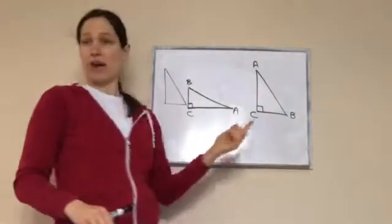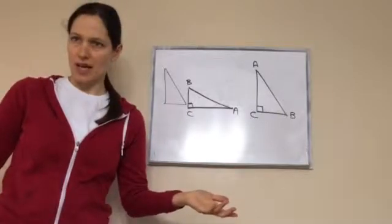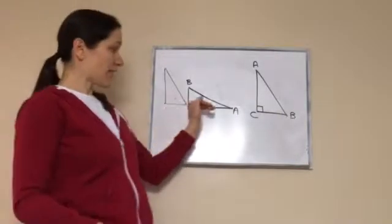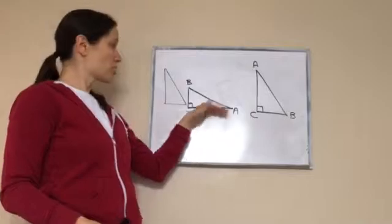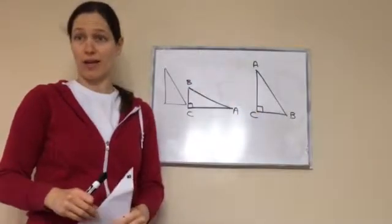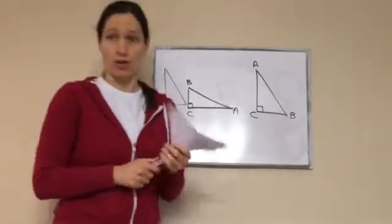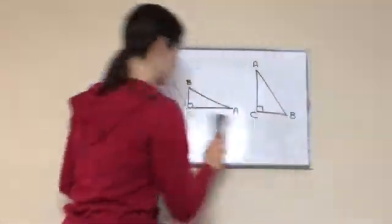So when you see sometimes we'll say like on a test are these two triangles congruent and you would have been like well no they don't even look anything the same, but if you were to take the same triangle, rotate it, turn it, and then flip it, it is the exact same triangle. It's just turned so yes they are congruent. Don't let that trick you when they do that on a test.